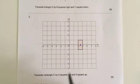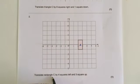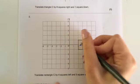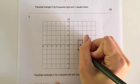Let's do another one. So this time we've got a rectangle, and it wants us to move it four squares left and three squares up. So let's choose a corner again. I'm going to choose this one.